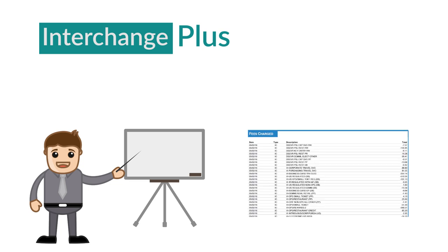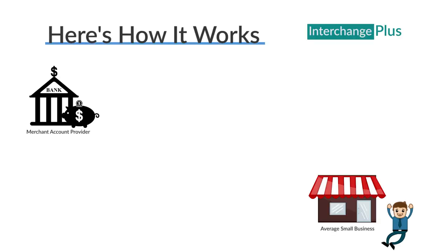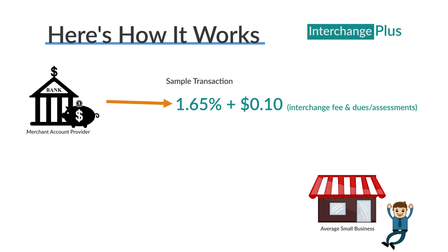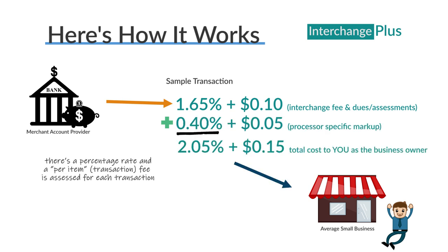The first pricing model is interchange plus, also known as cost-plus pricing. It's commonplace in the merchant account industry and often the go-to model for processing companies. The merchant account provider passes through the network costs — interchange — and then adds a processor-specific markup to cover other costs associated with maintaining that merchant account.